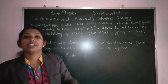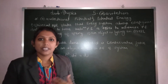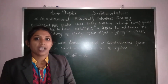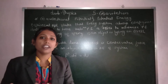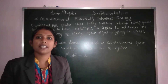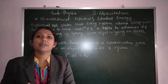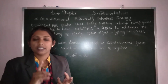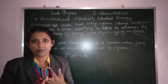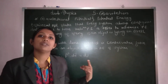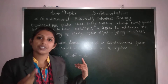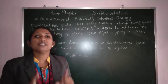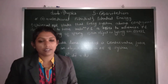Now, as per gravitational potential is considered, we are considering the gravitational force. The formula we have studied is F equals GMm upon r squared. Here, one M is the mass of the earth and the other m is the mass of the object. So when we are finding the gravitational potential energy or gravitational potential, we are considering the mass of the earth and the object on that earth.